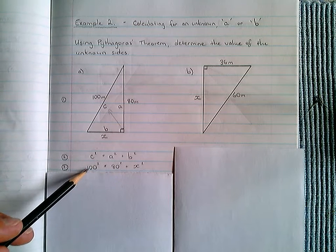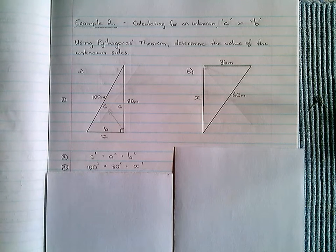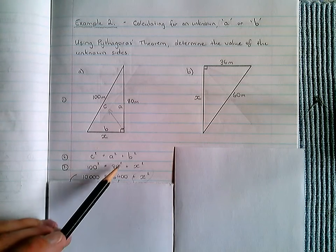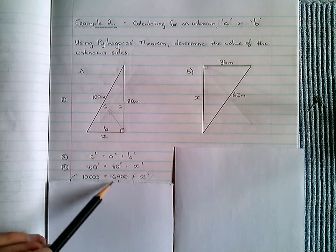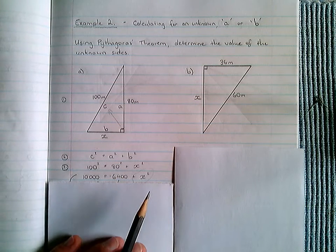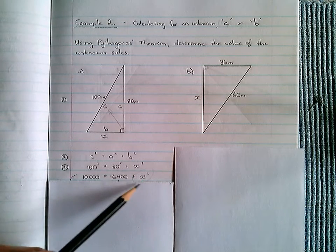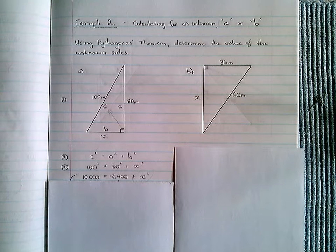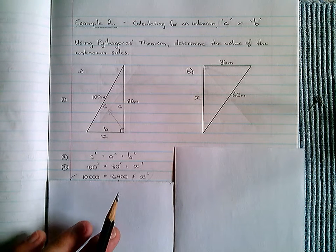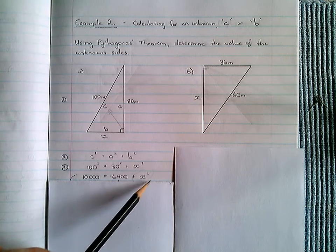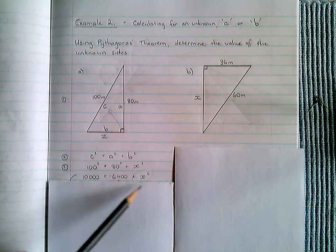We're going to simply simplify these two values of 100 squared and 80 squared. So, the next line, we're going to write 100 times 100, which is going to result in 10,000, is equal to 80 times 80, which is 6400, plus the remaining X squared. As I said before, we've got this X squared on the right-hand side, as opposed to the left-hand side, which is the way we had in example 1. However, that should not be a problem.